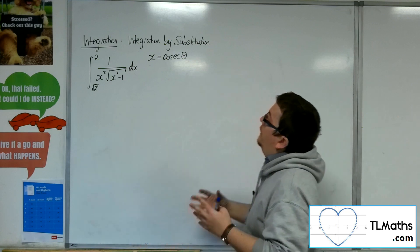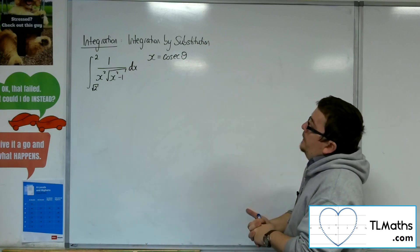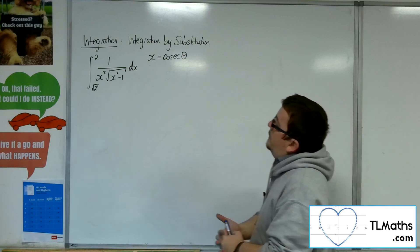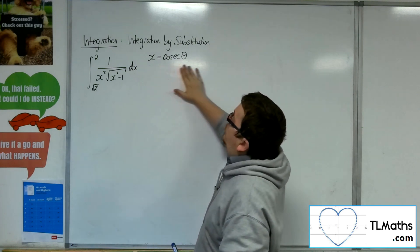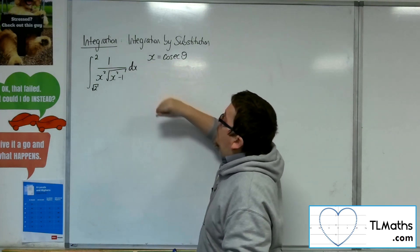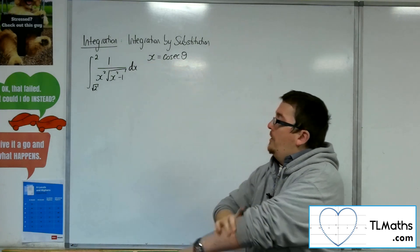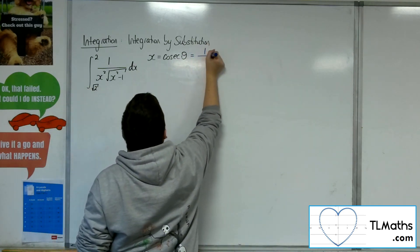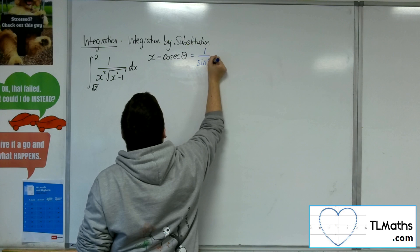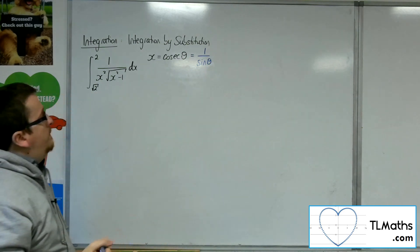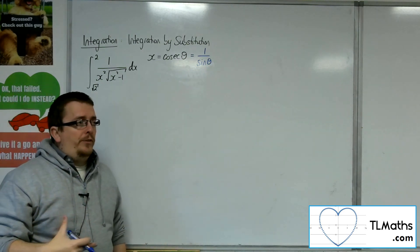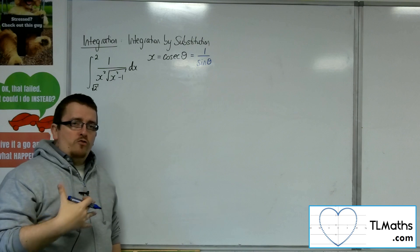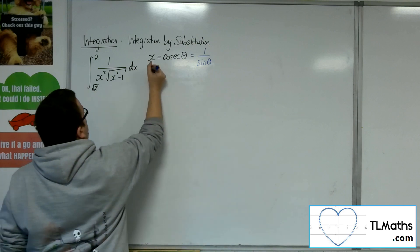So let's start off with finding the dx by d theta. Now that's not immediately obvious. X equals cosec theta. We don't know what that differentiates to necessarily. So what we're going to first of all do is write that as 1 over sine theta. Now you could use quotient rule to differentiate this or you could use chain rule.